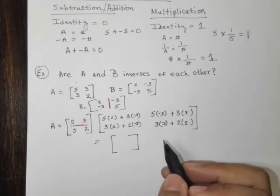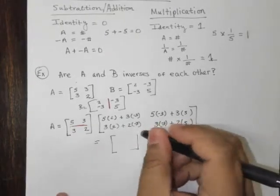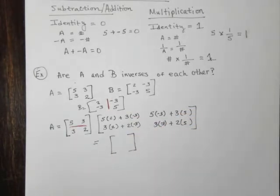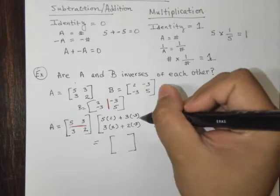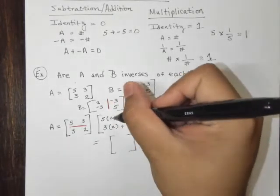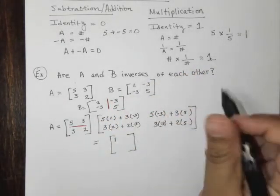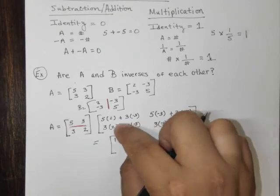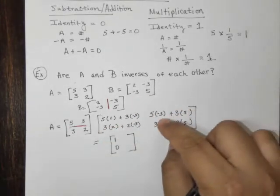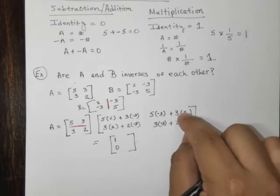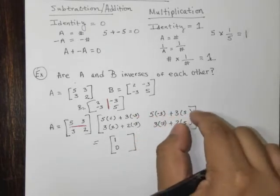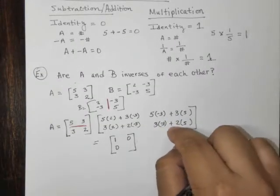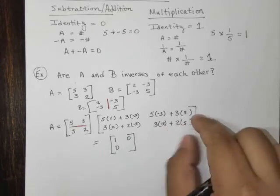So what does that look like for us? Let me write out my 2 by 2 matrix here. So we have 5 times 2 plus 3 times negative 3. So that's 10 minus 9. That's 1. And let's work this one right here. 3 times 2 is 6. 2 times negative 3 is negative 6. So 6 minus 6 is 0. 5 times negative 3 is negative 15. And 3 times 5 is positive 15. Negative 15 plus 15 is 0. 3 times negative 3 is negative 9. And 2 times 5 is 10. Negative 9 plus 10 is 1.